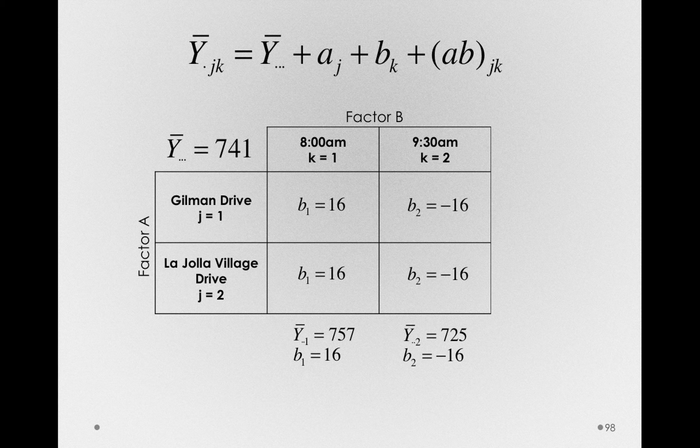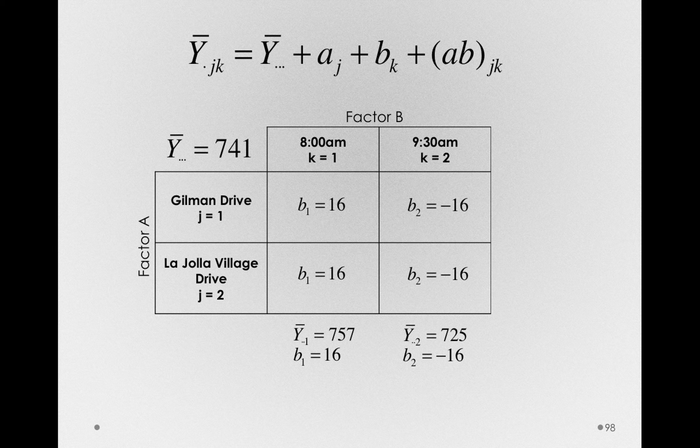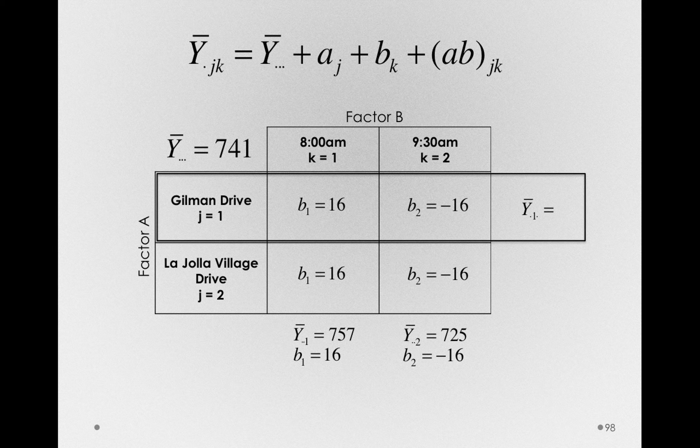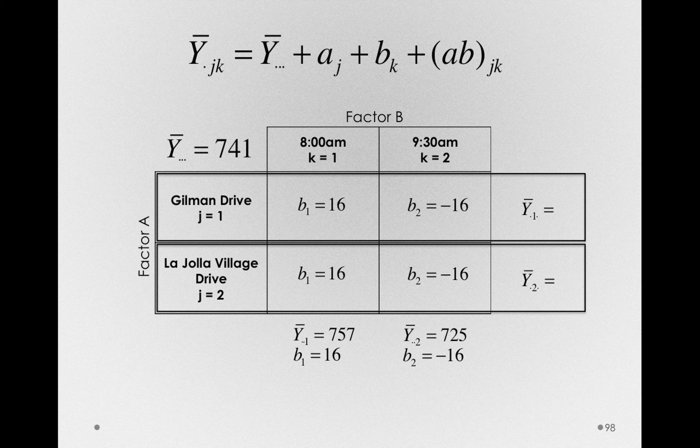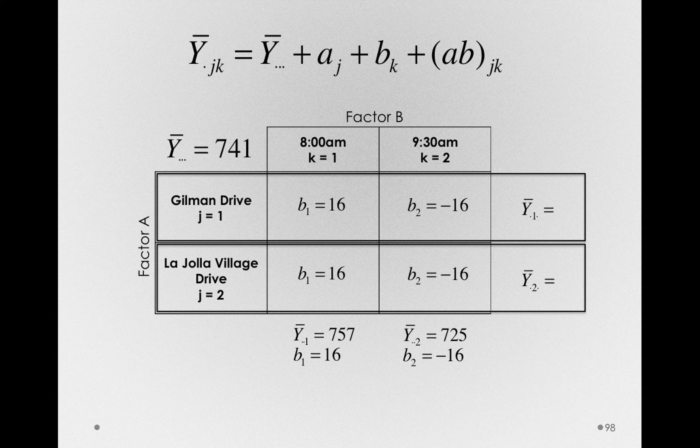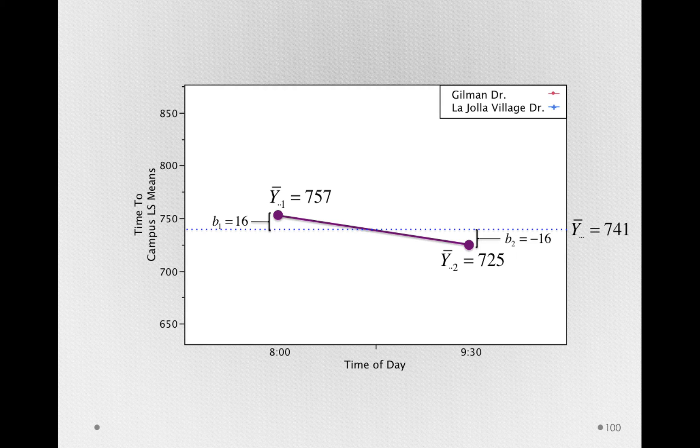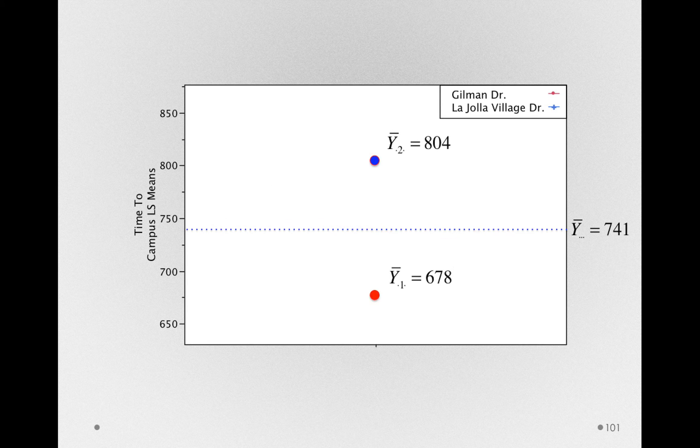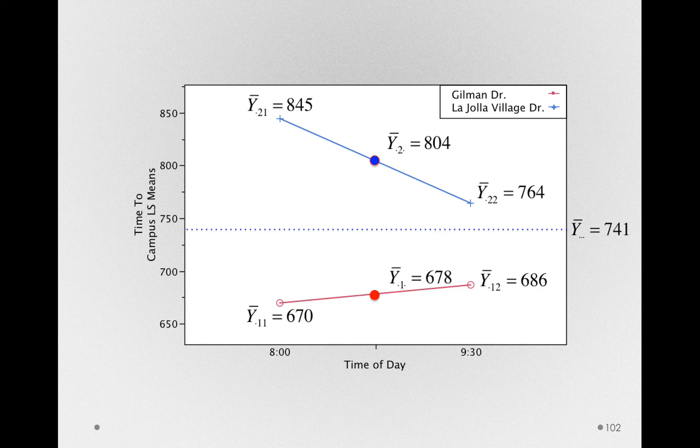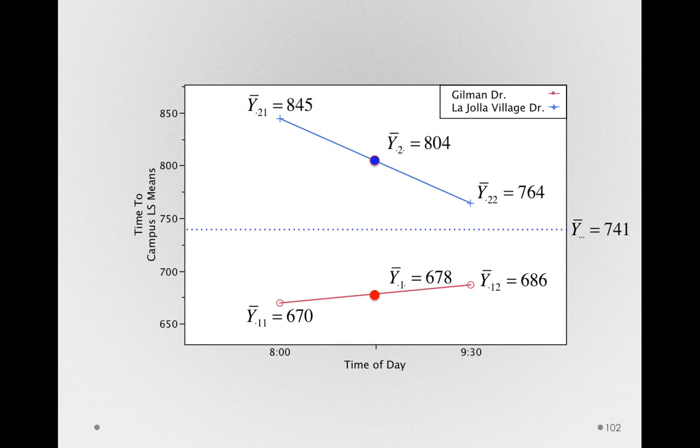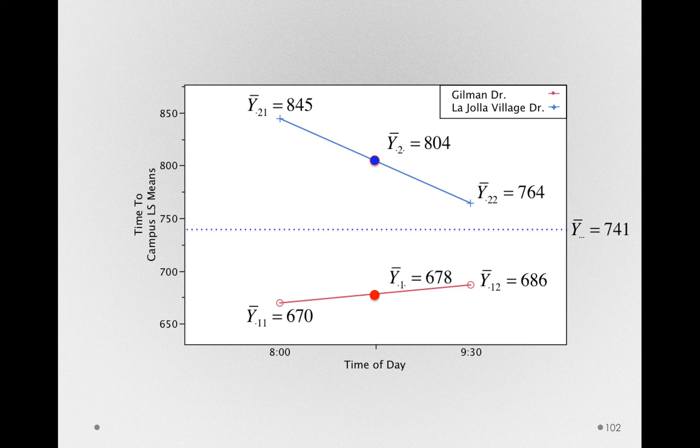Alright, let's consider now factor A. Like we did before, to find the offsets, the A sub J's for factor A, we'll have to consider the marginal mean at Gilman Drive, y bar dot 1 dot, and the marginal mean at La Jolla Village Drive, y bar dot 2 dot. Now like we did before, we can see this by looking at the factorial plot. Remember, when we found the marginal mean for the Gilman Drive versus La Jolla Village Drive group, we simply ignored the time of day effect. We found this by looking at the midpoint in the factorial lines. The average at Gilman Drive or La Jolla Village Drive is really just the average of the 8 o'clock and 9:30 observations for each of those different routes.